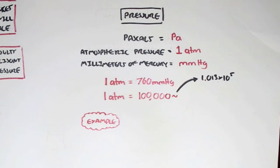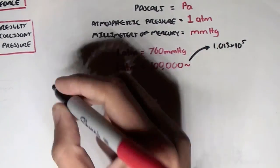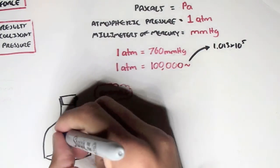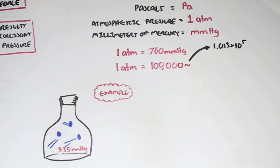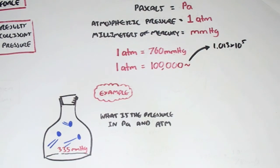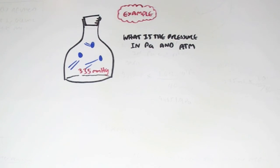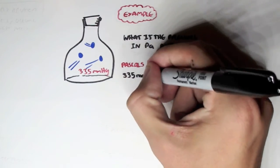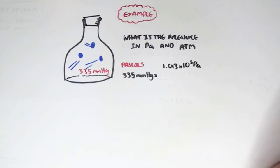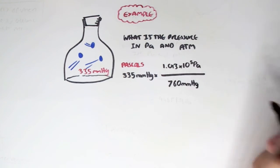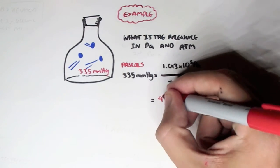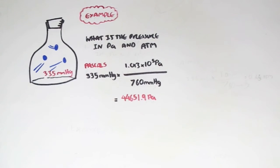Now let's look at an example. Let's say we have a jar containing some gas particles, and the gas particle exerts some force. The pressure in this container is 335 millimeters mercury. The question is: what is the pressure in Pascals and atmospheric pressure? We know that 760 millimeters mercury equals roughly 101,300 Pascals. So to convert to Pascals, we go 335 millimeters mercury times 101,300 Pascals divided by 760 millimeters mercury, which gives us 44,651.9 Pascals.